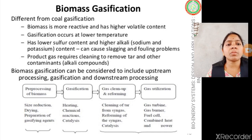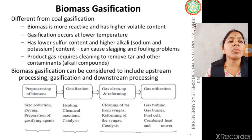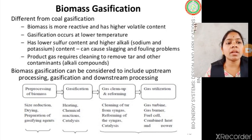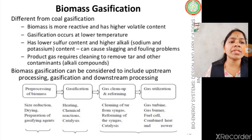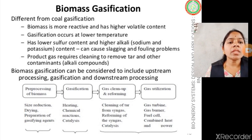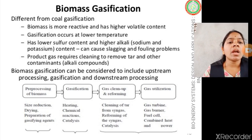The producer gas output from gasification is not in purified form; it needs to be cleaned to remove mainly tar, which is a volatile compound, and other contaminants — mainly alkalis such as sodium and potassium — which tend to reduce the calorific value of the producer gas. Therefore, these components need to be removed from the producer gas in order to increase its efficiency. Biomass gasification can be broadly classified into three segments: upstream processing, downstream processing, and the gasification process itself.